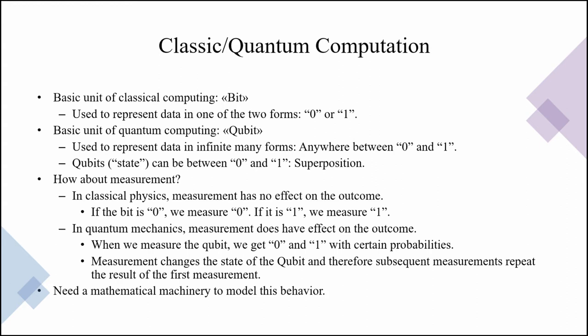Also, one of the other things that is important in quantum mechanics is the effect of measurement to the state of the system. In classical physics, measurement has no effect on the outcome whatsoever. It does not simply affect the system in any way. The reason in classical physics is that we deal with macroscopic materials or mass. So when we go to subatomic levels, measurements start having effect on the outcome or the state of the system. So more clearly, when we measure the qubit, we get 0 and 1 with certain probabilities. We'll learn more about the nature of the measurement and associated outcomes, but measurement changes the state of the qubit, and therefore subsequent measurements repeat the result of the first measurement.